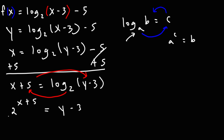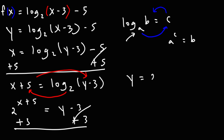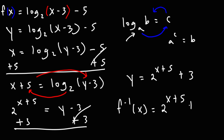Now, remember our goal is to solve for y. To do that, we just need to add 3 to both sides. So we get that y is equal to 2 raised to the x plus 5 plus 3. After we solve for y, we can replace it not with f of x, but the inverse of f of x. So we can write our final answer like this: the inverse of f of x is 2 raised to the x plus 5 plus 3.